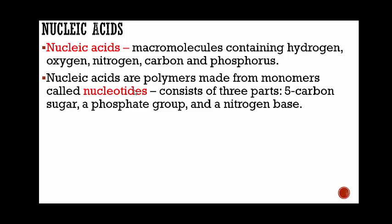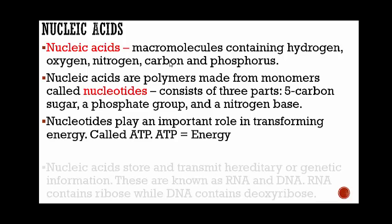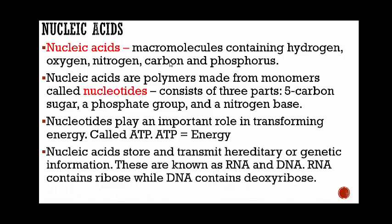Nucleotides consist of three parts: a five-carbon sugar, a phosphate group, and a nitrogen base. Nucleotides play an important role in transforming energy — this is called ATP, adenosine triphosphate, which simply means energy. Nucleic acids store and transmit hereditary or genetic information; these are known as RNA and DNA. RNA contains ribose while DNA contains deoxyribose.